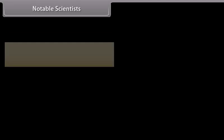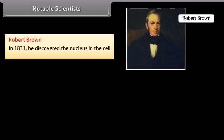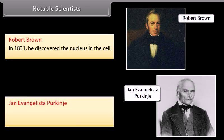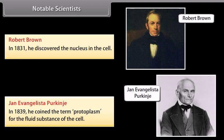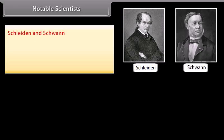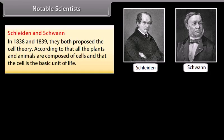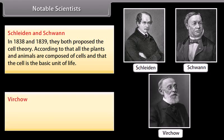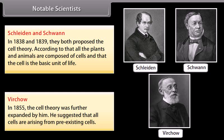Notable scientists: Robert Brown in 1831 discovered the nucleus in the cell. Jan Evangelista Purkinje in 1839 coined the term protoplasm for the fluid substance of the cell. Schleiden and Schwann in 1838 and 1839 both proposed the cell theory — that all plants and animals are composed of cells and that the cell is the basic unit of life. Virchow in 1855 further expanded the cell theory, suggesting that all cells arise from pre-existing cells.